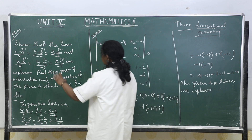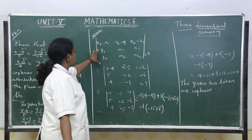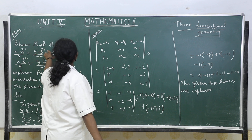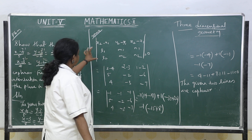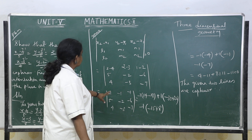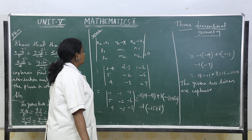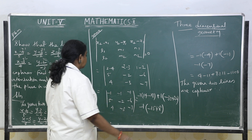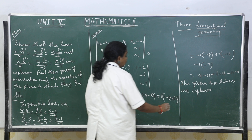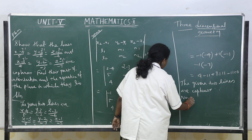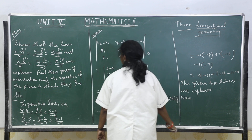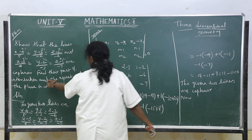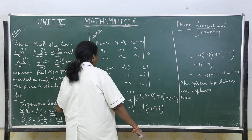To prove these two lines are coplanar, we used the determinant formula with x1, y1, z1 and x2, y2, z2 as identified. Using determinant expansion, this is confirmed coplanar. Now we have to find the equation of the plane and the point of intersection.